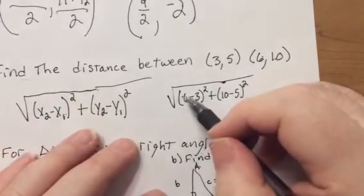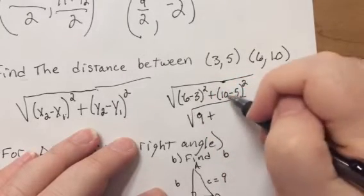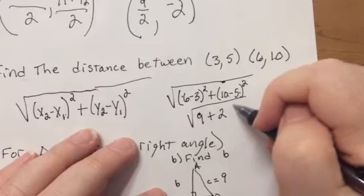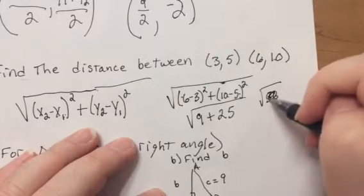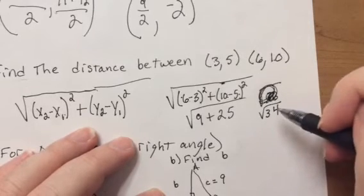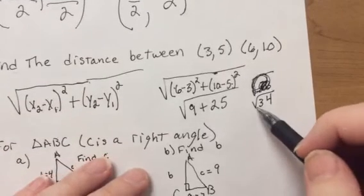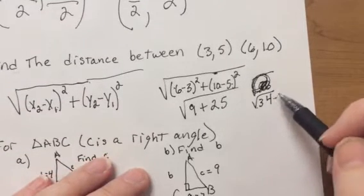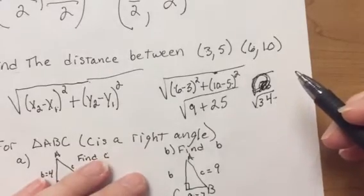So, 6 minus 3 is 3, squared is 9, plus 10 minus 5 is 5, squared is 25. So, it's the square root of 34. Oh, my goodness. Square root of 34. Sorry about that. So, now notice, square root of 36 is right above it, and that's 6. So, this has to be between 5 and 6.